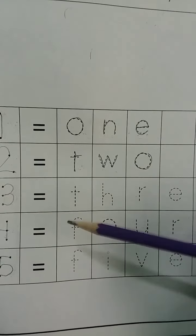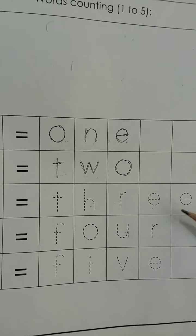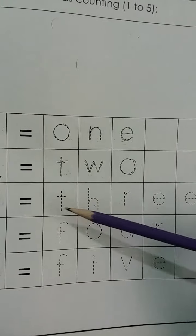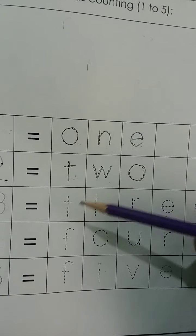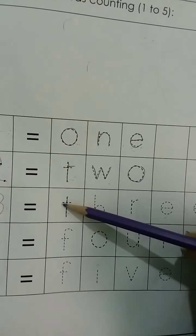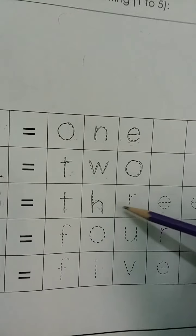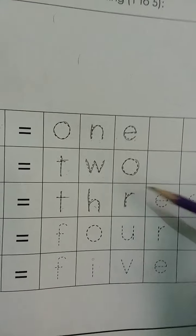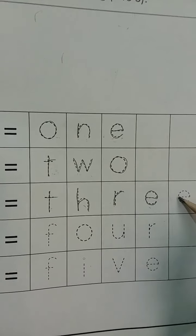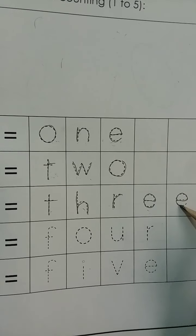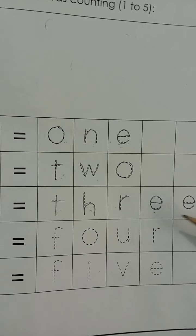Now trace 3. Kids look at here. Read with me: T, H, R, E, 3. Now trace with the help of pencil — press T, press H, now press R, press E like this. Kids, read with me: T, H, R, E, 3.